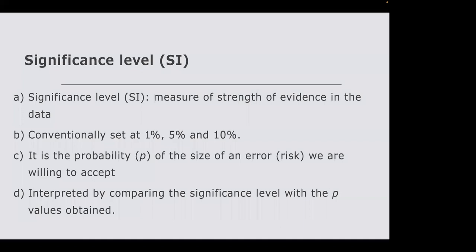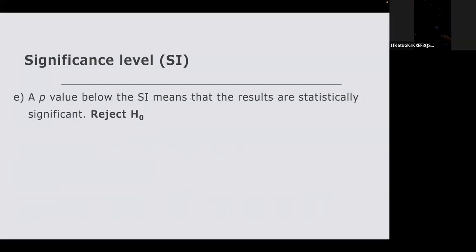Significance levels are interpreted in relation to p-values. The p-value is the probability of making an error. A p-value below the significance level means results are statistically significant, and we reject H₀. If your significance level is 5% and your p-value is below 5%, results are significant. If above 5%, results are not statistically significant at that chosen level. Some researchers argue that a result very close to the threshold — say 4.9% when testing at 5% — should be described as 'marginally significant.'